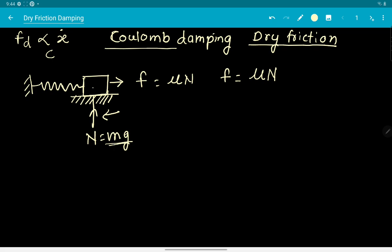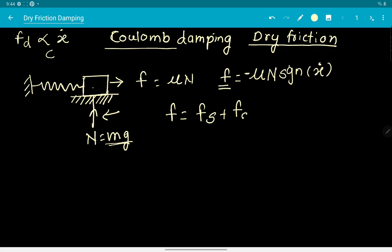The friction force can be written as μ times N — where N is the normal reaction, which typically equals mg — times the sign of ẋ, opposite to that sign. So the frictional force expression is μN·sgn(ẋ), whatever sign ẋ is having, the friction force opposes that. This is either called the signum function or simply the sign of ẋ.